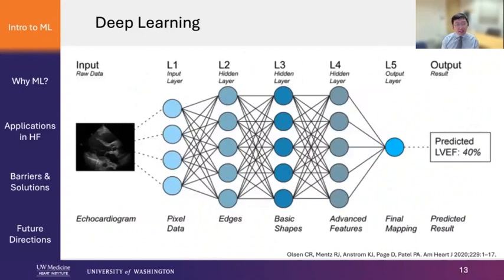Another thing that has been really popular in the literature and in the news is deep learning. Deep learning is a subset of machine learning that uses neural networks modeled after our human brains to make predictions. For example, you can take an echocardiogram and through a deep learning neural network model, predict the LV ejection fraction. Deep learning really excels at image recognition, audio data, and natural language processing.